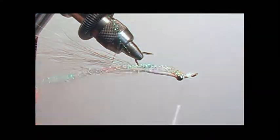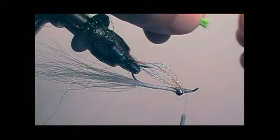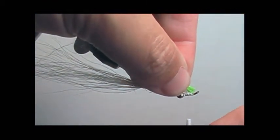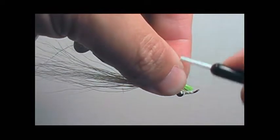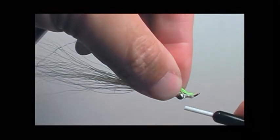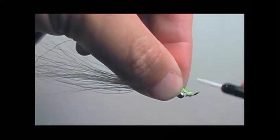Next we'll take the chartreuse bucktail and tie it right between the dumbbell eyes and the eye of the hook. We'll wrap over it and on the other side pull it straight up to lash it, and we'll build a head.